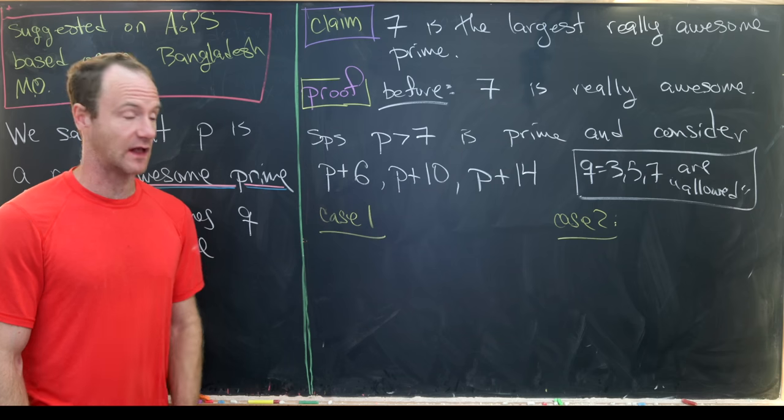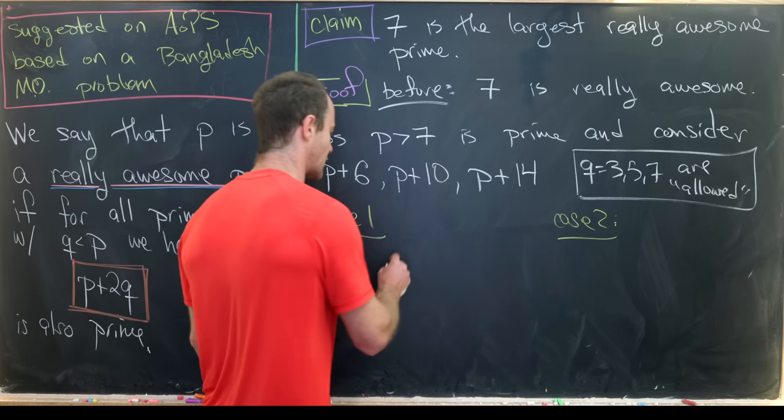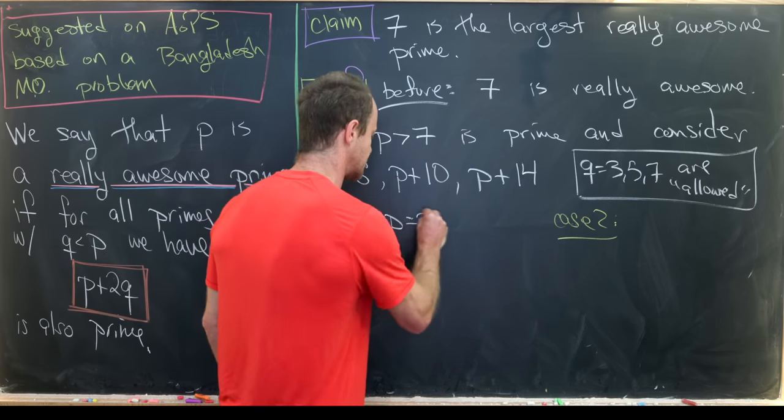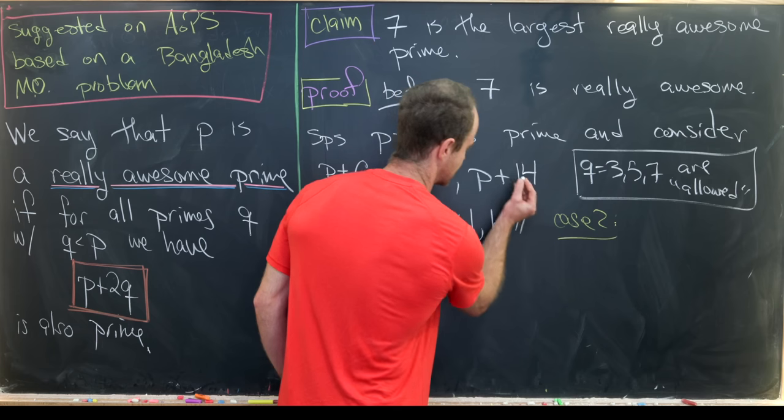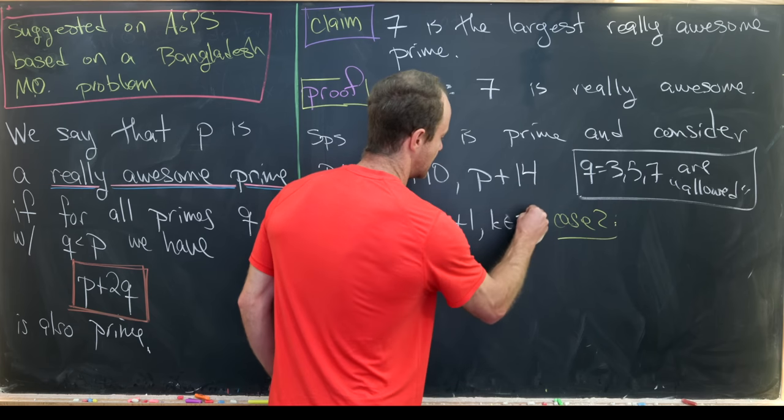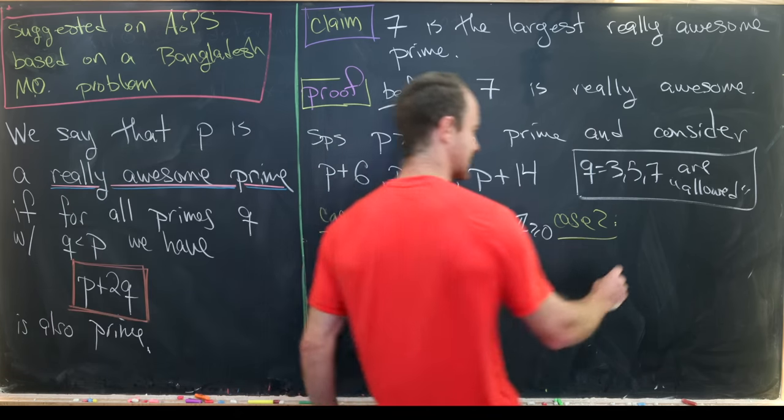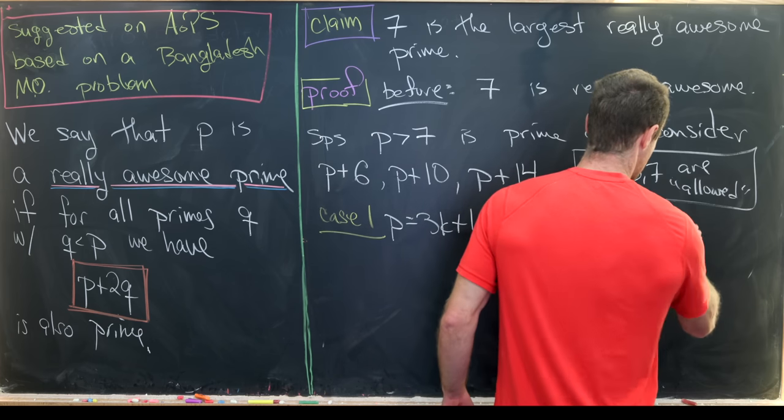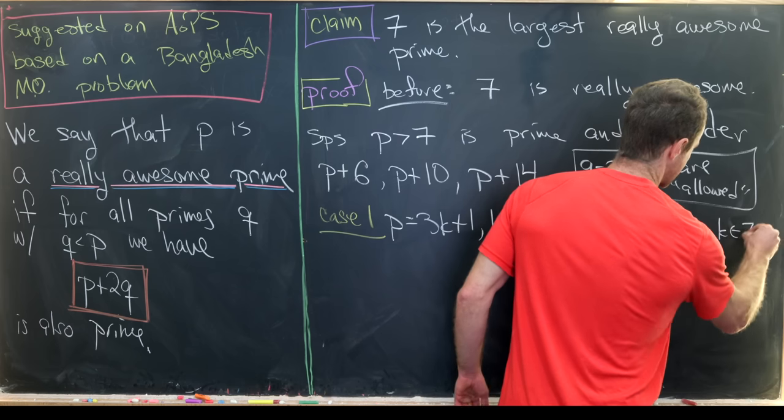So case number 1 is p equals 3k plus 1 for some non-negative integer k. And then our second case will be p equals 3k plus 2 for some non-negative integer k.